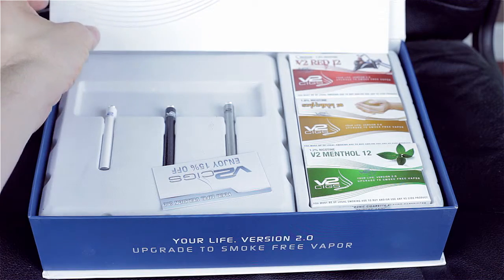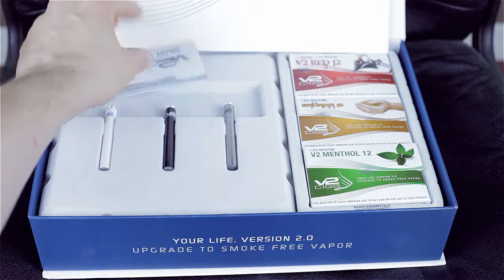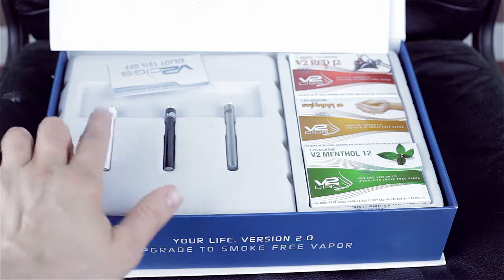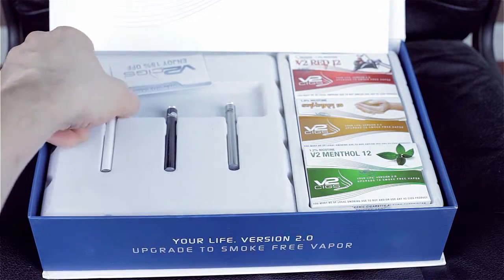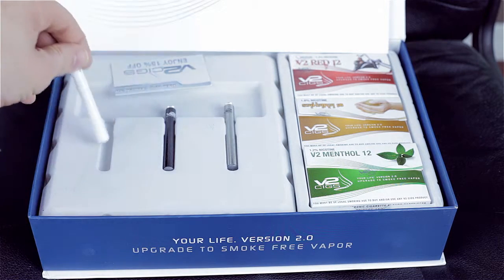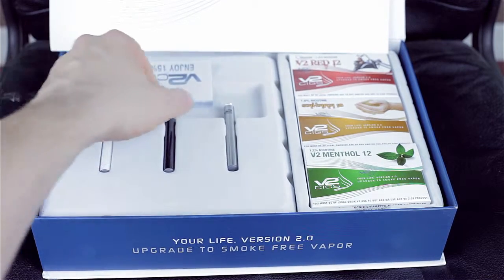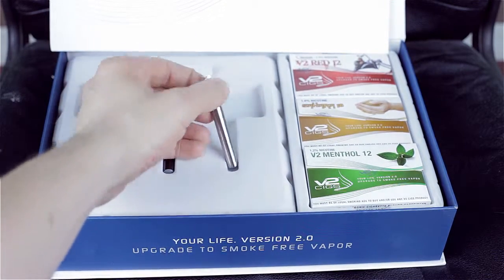This kit has cartridges, batteries, cases, and some additional accessories. First off, you're going to get three batteries. V2 allows you to choose the color and types of batteries. You can choose from white, black, stainless steel, blue, and pink.